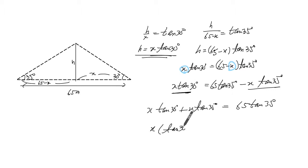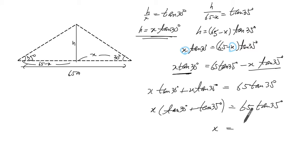So tangent of 30 plus tangent of 35. And you have 65 tangent of 35. So finally, x is going to equal to 65 tangent of 35 all over the sum of tangent of 30 tangent of 35.